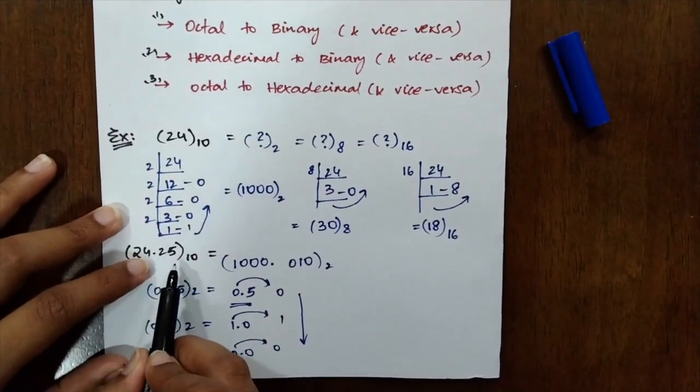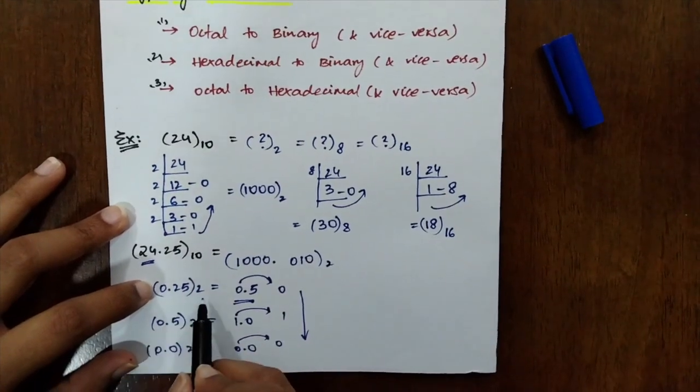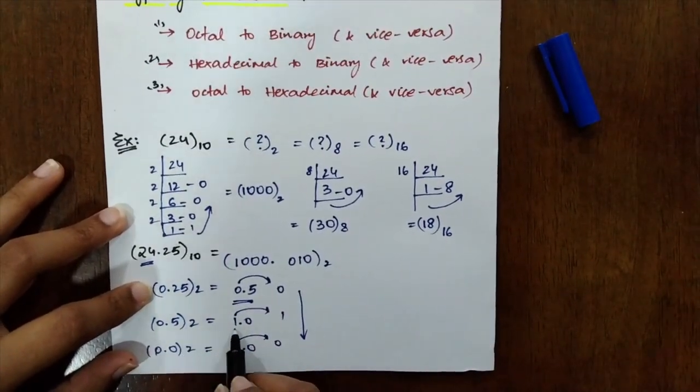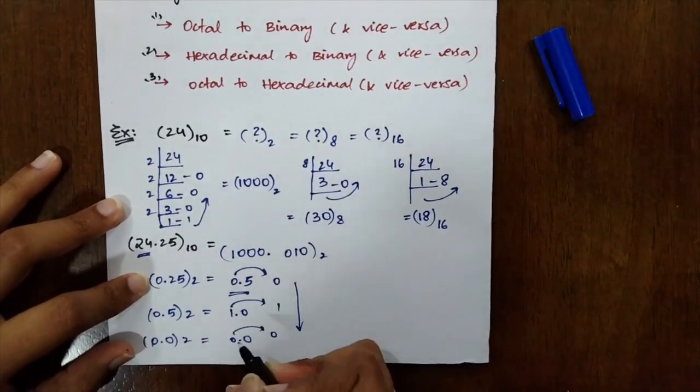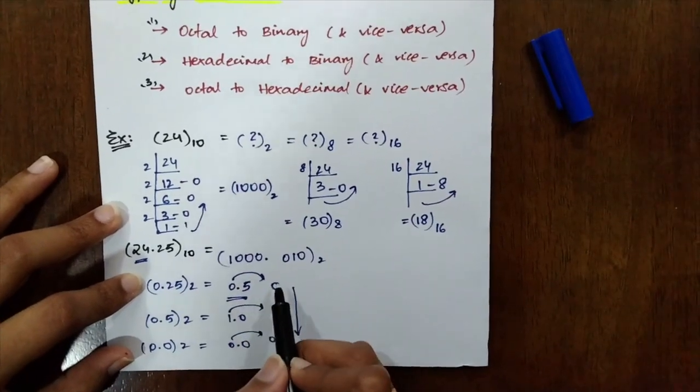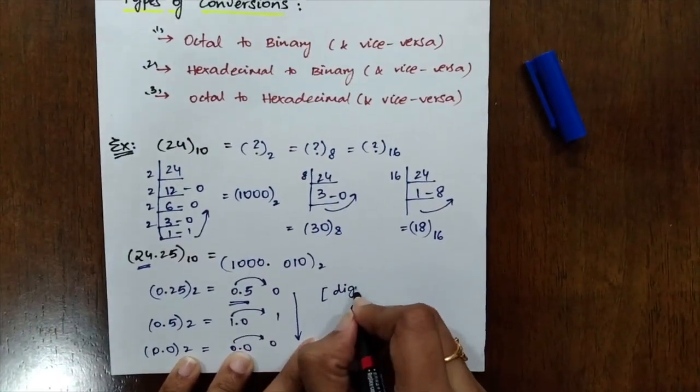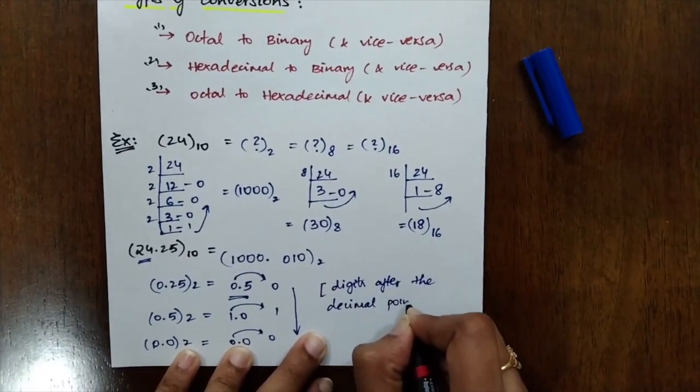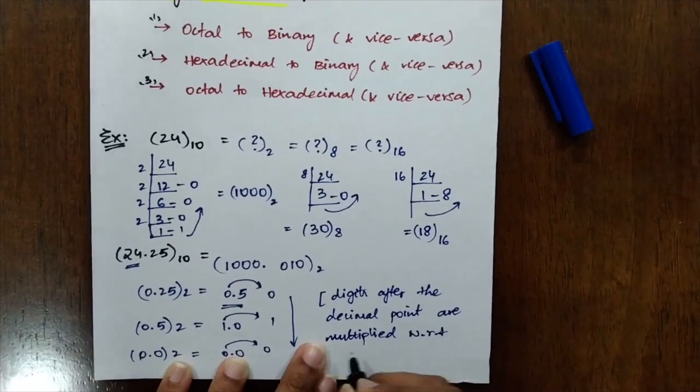I hope it's a little tricky, but again, I want to explain you this particular problem. Whenever you want to convert the values after decimal into some other format, what you will be doing is you need to multiply instead of dividing it. Like 0.25 into 2 equals 0.5. The integer part is taken. And the ones that are left behind the dot, which is 0.5 again. So 0.5 into 2 equals 1.0. Again, take the integer part. The ones after the decimal is 0. So 0.0 into 2 again gives you 0. You can keep on going. You will be getting all the time 0, 0, 0. So you can stop it there itself. So the value for 24.25 in decimal format equals 1000.010 in binary format.